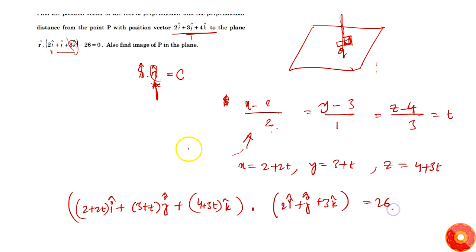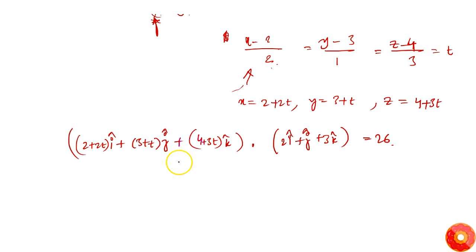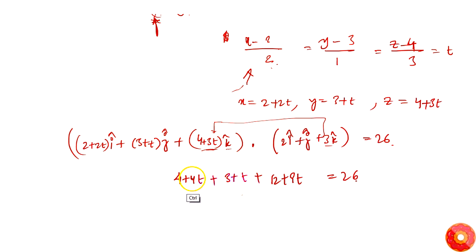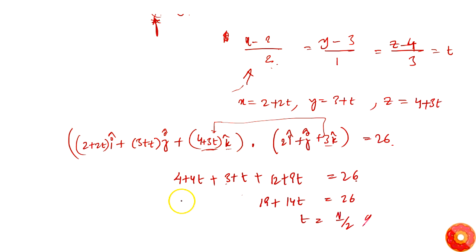The dot product gives: 2(2 + 2t) + (3 + t) + 3(4 + 3t) = 26. Expanding: 4 + 4t + 3 + t + 12 + 9t = 26, which simplifies to 19 + 14t = 26. Solving, we get t = 1/2.